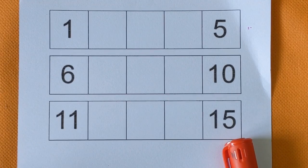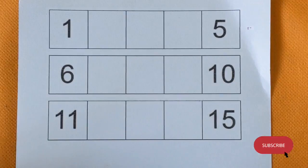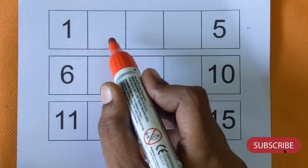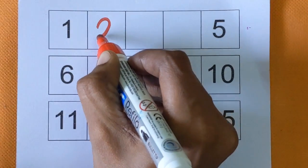So, let's get started. This is number 1. After number 1, next, which number is missing here? It's a number 2.